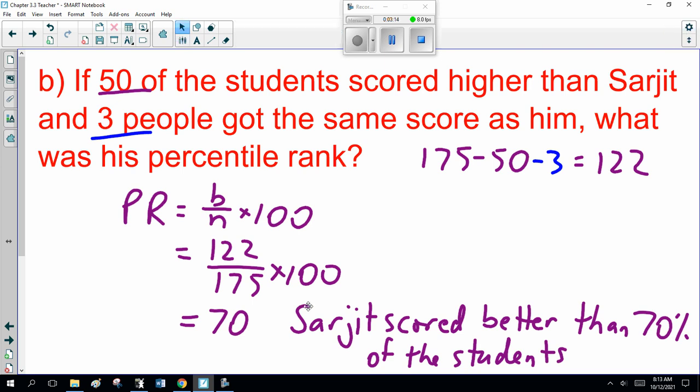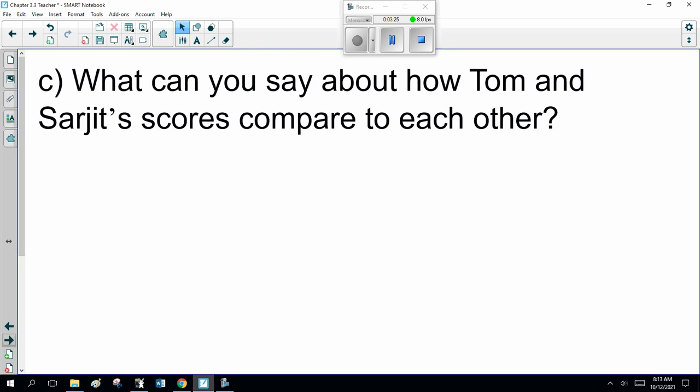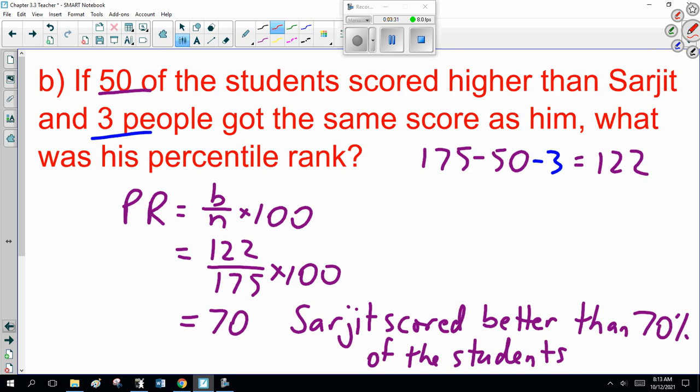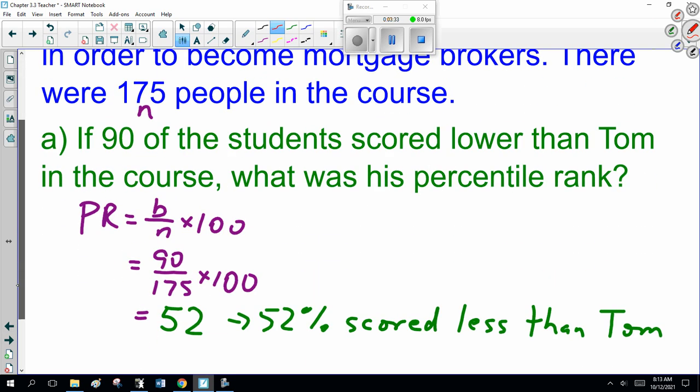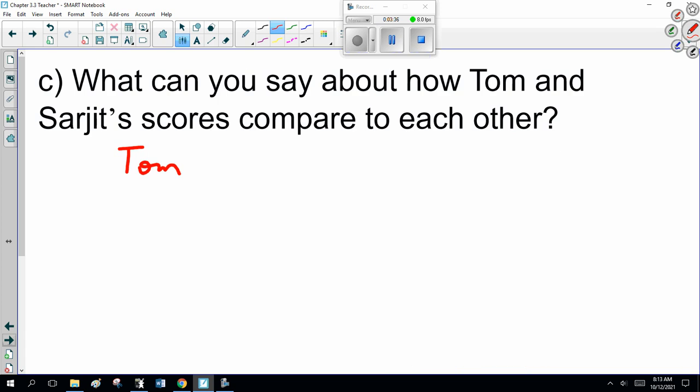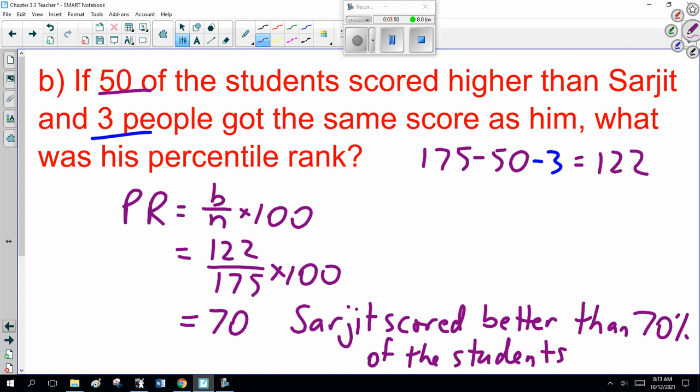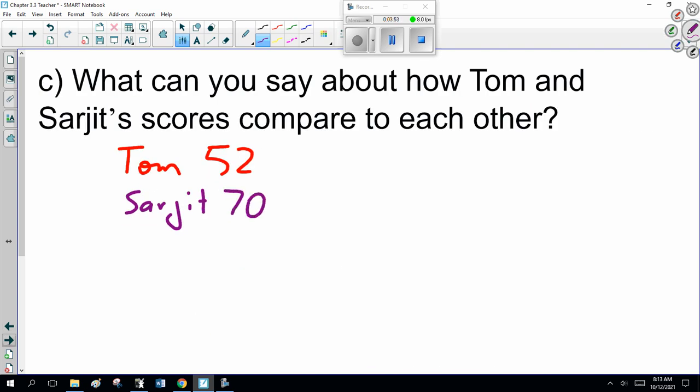So, this lets us compare numbers fairly readily, turn them into percentages. Now, what can you say about how Tom and Sarjit scored compared to each other? Well, Tom was 52nd percentile. Sarjit was 70%, 70th percentile. So, he did a lot better.